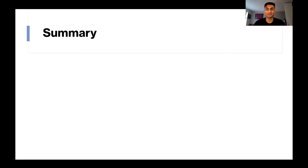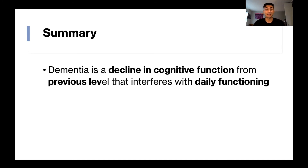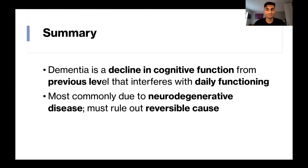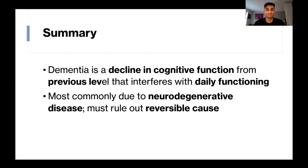Let's summarize what we went over. We learned that dementia is a declining cognitive function from the previous level that interferes with daily functioning. It's most commonly due to a neurodegenerative disease, but it's important to first rule out reversible causes. These include drugs, emotional such as depression, metabolic causes, eyes and ears, normal pressure hydrocephalus, tumor or space-occupying lesion, infection, and anemia — all remembered by the DEMENTIA acronym.